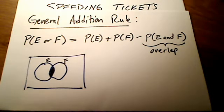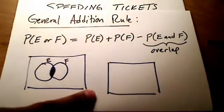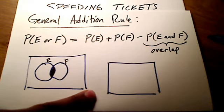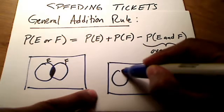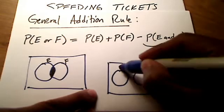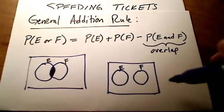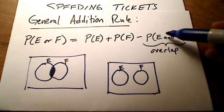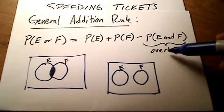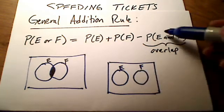Real quickly here, if E and F are mutually exclusive, or what one author calls disjoint, then this is the picture - here's the Venn diagram, here's E and here's F. Since they don't overlap at all, the probability of E and F would just be zero.